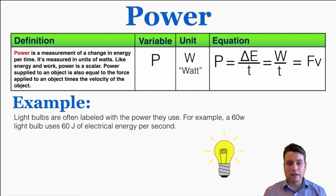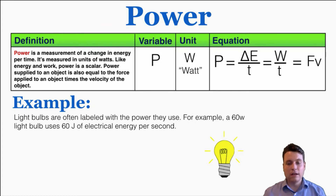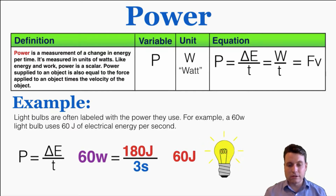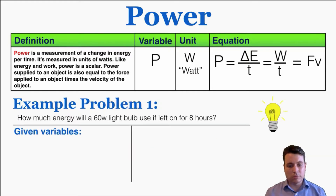Just as an example, you've probably seen that light bulbs are often labeled with the power that they use. For example, a 60 watt light bulb uses 60 joules of electric energy per second — that's what a watt means. A watt is a joule per second, so a 60 watt light bulb uses 60 joules of electric energy every second, 120 joules in two seconds, 180 joules in three seconds, or 240 joules in four seconds. So power is a description of the rate of change of energy per time.